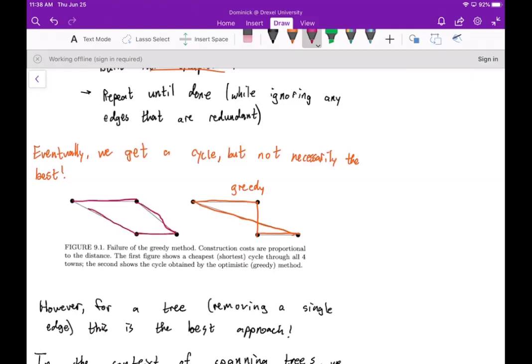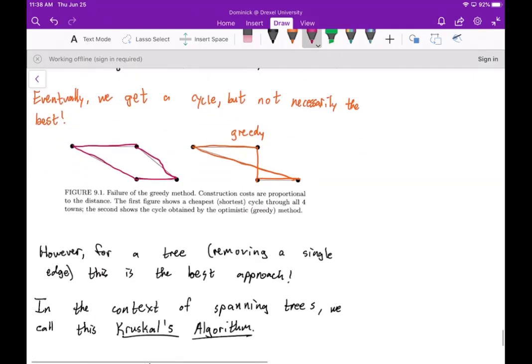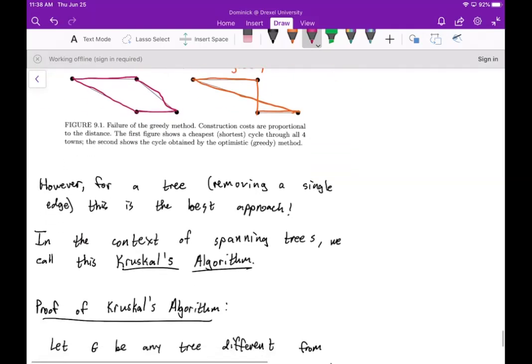But again, remember this is for that modified problem. For a tree removing a single edge, the greedy method is the best approach. But for this cycle, just by adding one more edge, you're not necessarily going to get the best. So if we just consider this in the context of a tree, we refer to this greedy method as what's called Kruskal's algorithm. It's to continually choose the cheapest line until you have your tree.